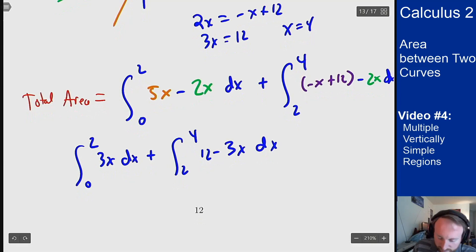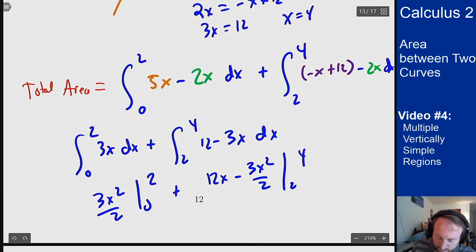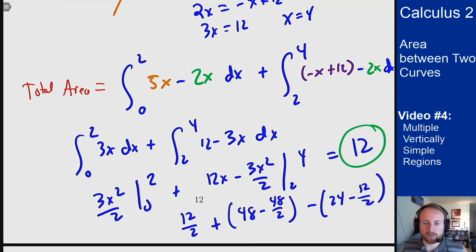Then we can find anti-derivatives. 3x squared over 2 from 0 to 2 plus 12x minus 3x squared over 2 from 2 to 4. Then we can plug in our answers. Zero here gives me zero, which all comes out to 12.